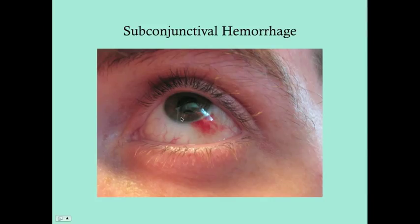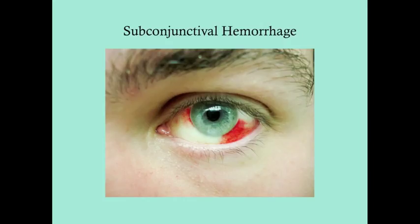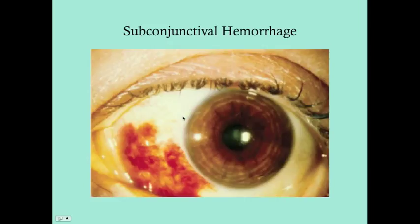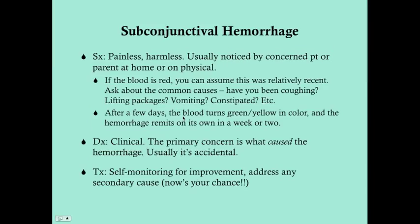Here is a subconjunctival hemorrhage. Note that it stops at the limbus because of the abrupt tissue transition — it's a closed system, so the blood won't cover the iris. This is a painless and harmless problem, but it's very easily noticed by a patient looking in the mirror in the morning. Patients usually end up in the ER or urgent care because seeing your eye bleeding is alarming, especially if it's never happened before.